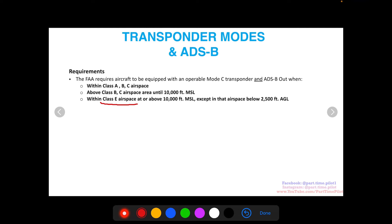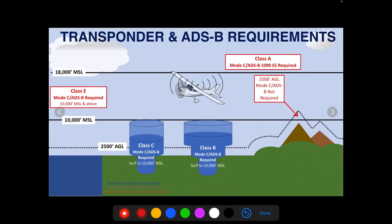Within Class E airspace at or above 10,000 feet MSL except in airspace below 2,500 feet AGL. We can safely assume if we're not in Class C, B, or A, we're in Class E. When we're above 10,000 feet, mode C and ADS-B is required, as you can see with these transmit symbols.